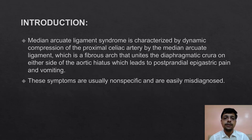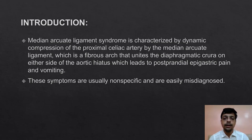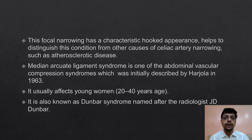Median Arcuate Ligament Syndrome is characterized by dynamic compression of the proximal celiac artery by the Median Arcuate Ligament, which is a fibrous arch that unites the diaphragmatic crura on either side of the aortic hiatus, leading to postprandial epigastric pain and vomiting. These symptoms are usually nonspecific and are easily misdiagnosed. This focal narrowing has a characteristic hooked appearance, which helps to distinguish this condition from other causes of celiac artery narrowing, such as atherosclerotic disease.